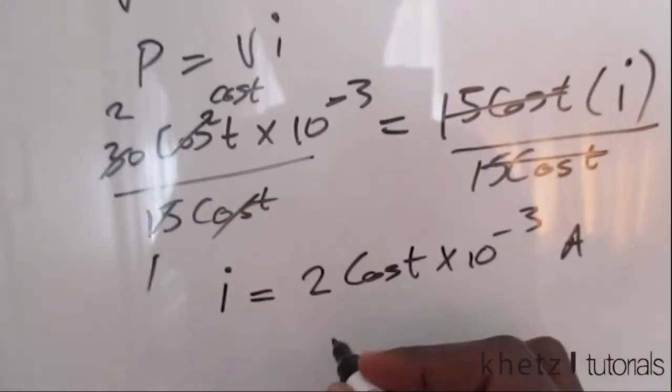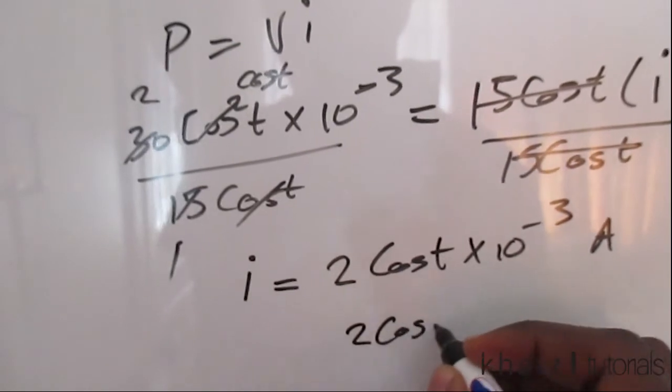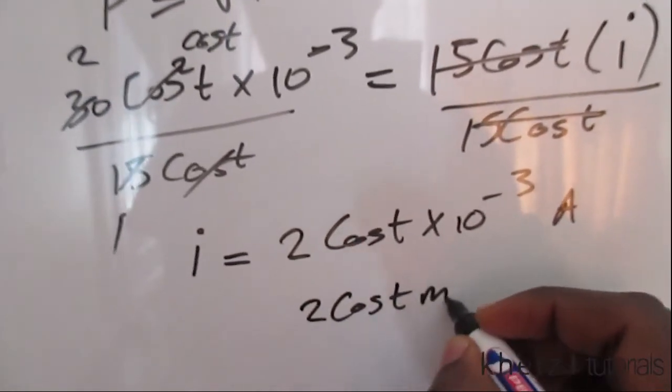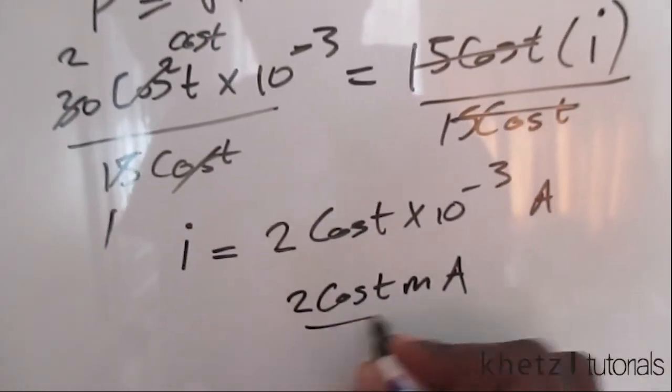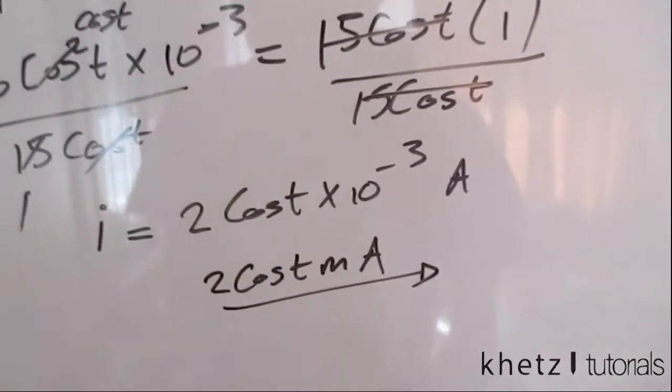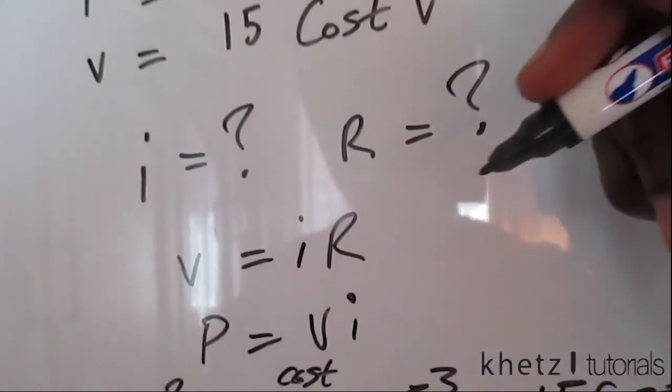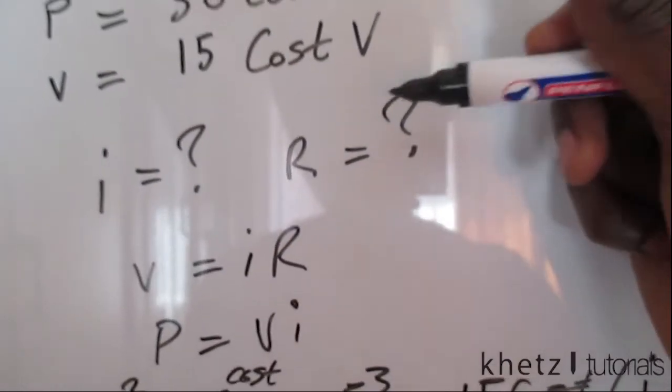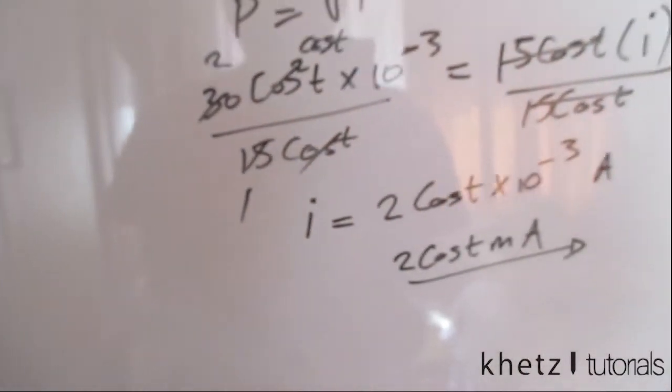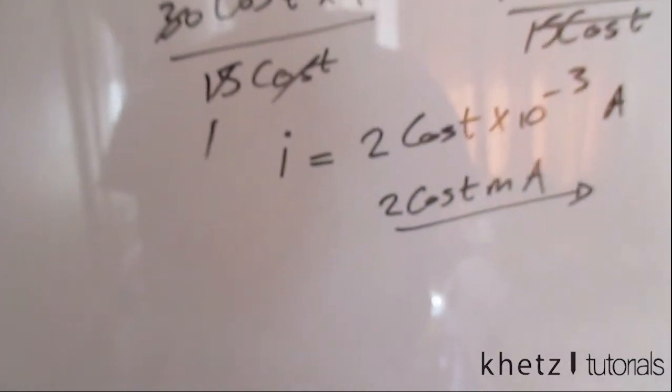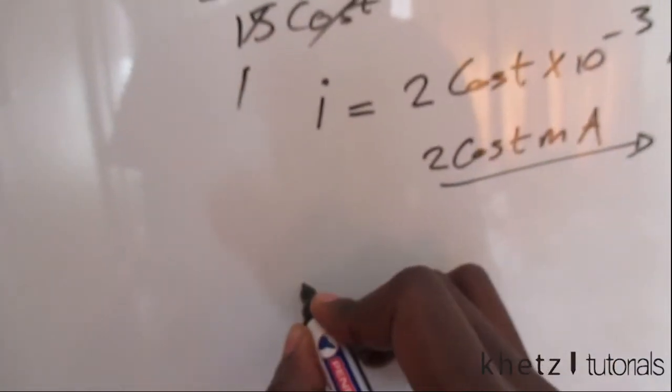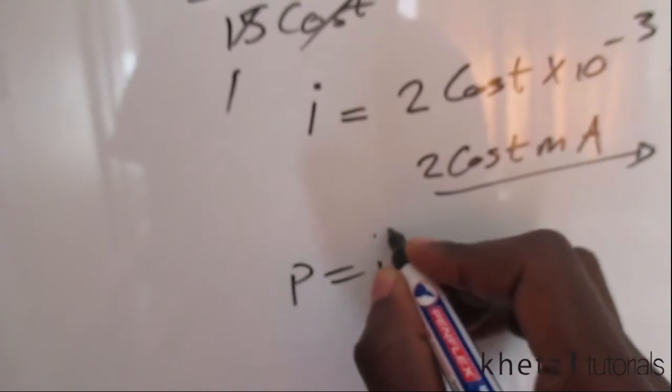2 cos t times 10 to the minus 3 amperes, which is the same as 2 cos t milliamperes. And there you have the current. Now moving on to the second part of the question which asks us to find the resistance.